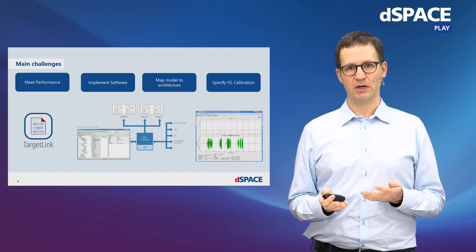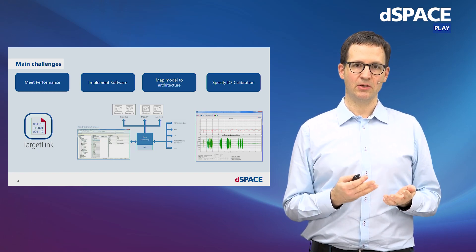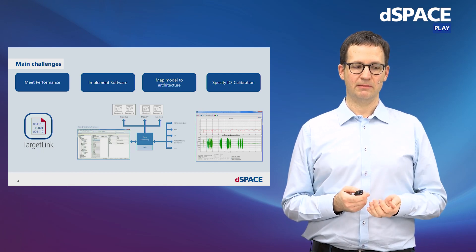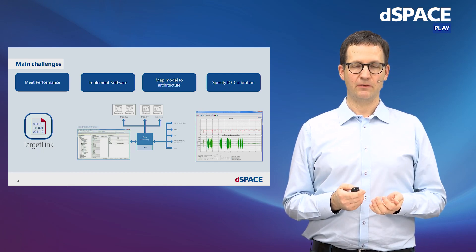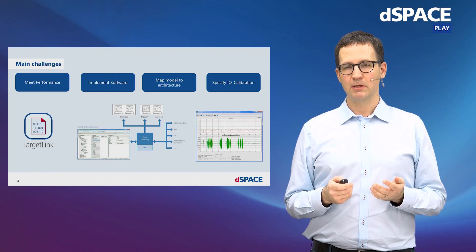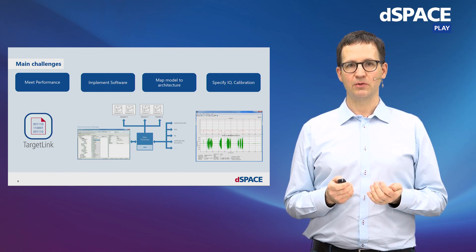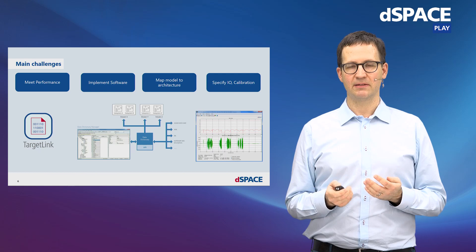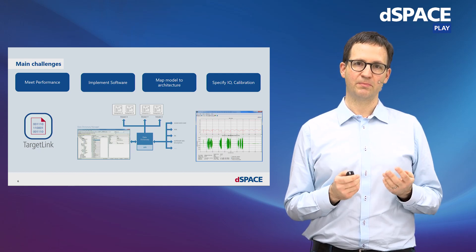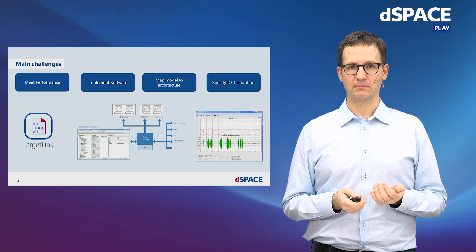So, if you change your hardware, all you need to do is change the configuration set in the TargetLink data dictionary. And finally, we use TargetLink's model-in-the-loop and software-in-the-loop simulation capabilities to verify that the generated production code meets the executable specification directly on the host PC.